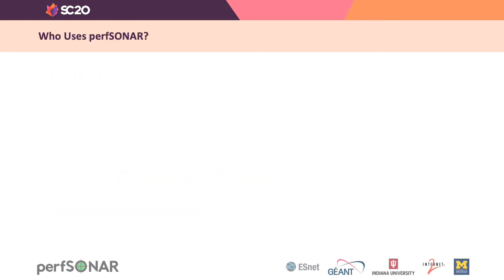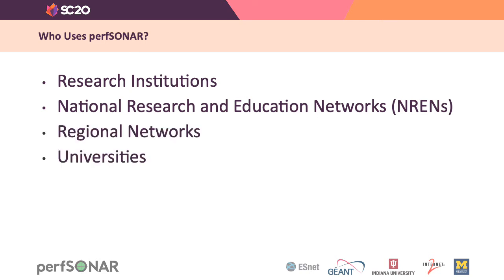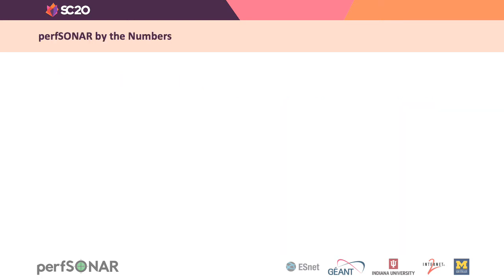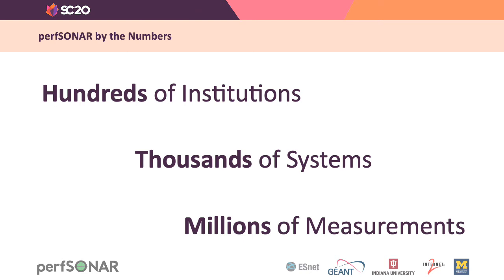The next question is where is it used? The low-hanging fruit would be research institutions that generate and transport large volumes of data, but PerfSonar's origins are really with network operators. NRENs use it — in fact, there's probably not an NREN without at least one PerfSonar node installed. Regional networks use it, universities use it, and even some K-12 school systems use it. PerfSonar is in use by governments on the civilian and defense sides, and also in private industry. It's installed at hundreds of institutions on thousands of systems making millions of measurements every day.